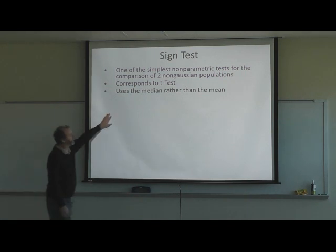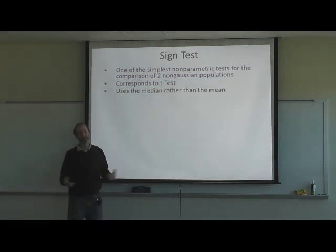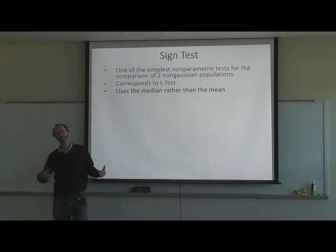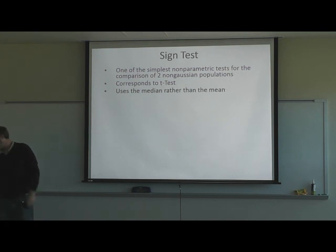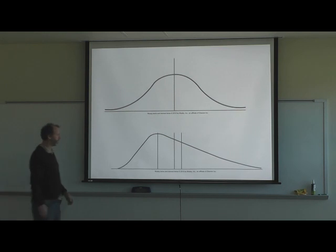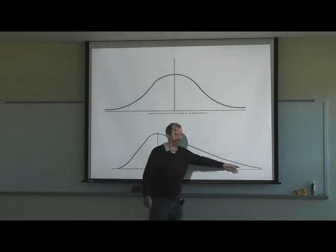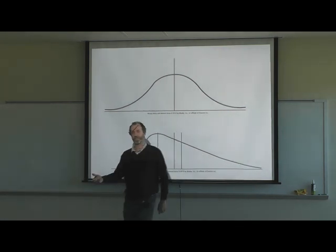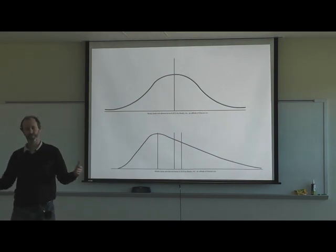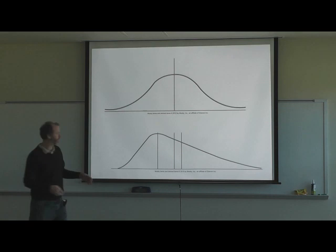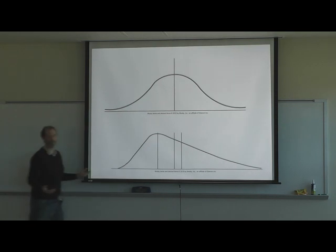The sign test uses the median rather than the mean. Does that make sense? A lot of the non-parametric tests are going to look at medians rather than the mean, because if you have a non-Gaussian distribution, you're going to have extreme values that will skew the mean. The median gives you an idea of the middle for a non-Gaussian distribution because it's the middle value.